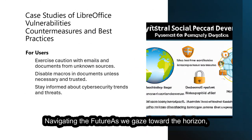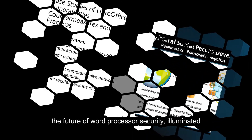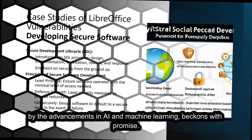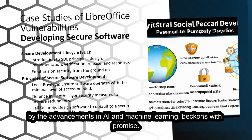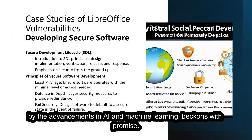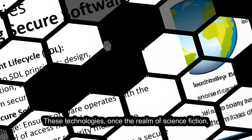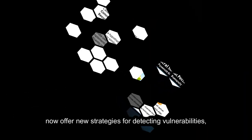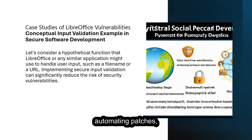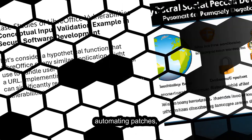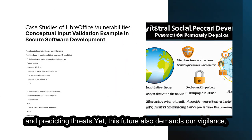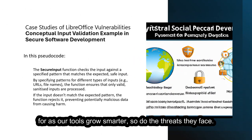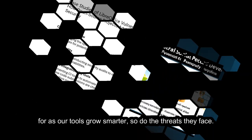As we gaze toward the horizon, the future of word processor security, illuminated by the advancements in AI and machine learning, beckons with promise. These technologies, once the realm of science fiction, now offer new strategies for detecting vulnerabilities, automating patches, and predicting threats. Yet this future also demands our vigilance, for as our tools grow smarter, so do the threats they face.